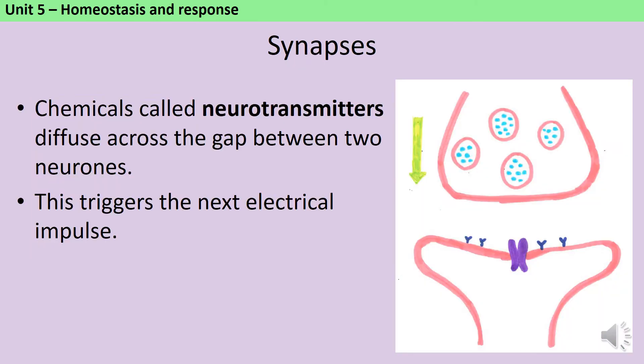These small gaps are called synapses, and at the synapse, the neuron releases a chemical called a neurotransmitter. This is able to diffuse across the gap, across the synapse, between the two neurons, so it goes from one neuron to the next neuron. When it binds to receptors on the second neuron, this triggers the next electrical impulse, and so the information continues to be relayed.